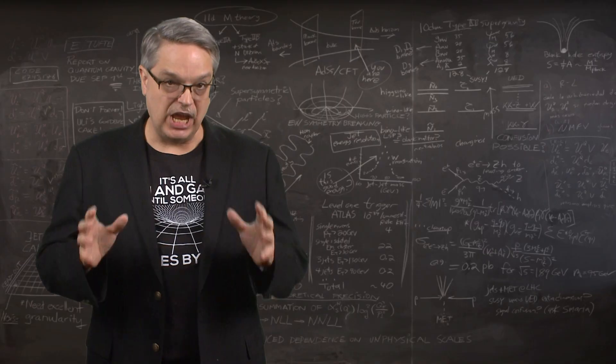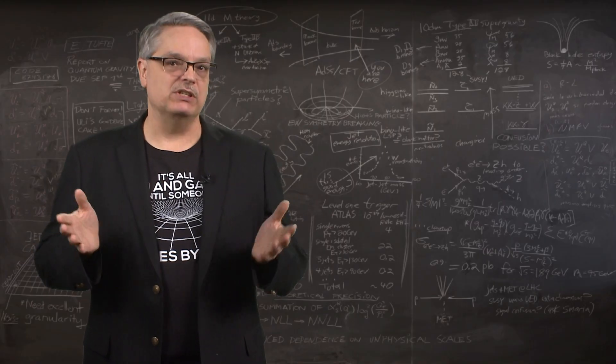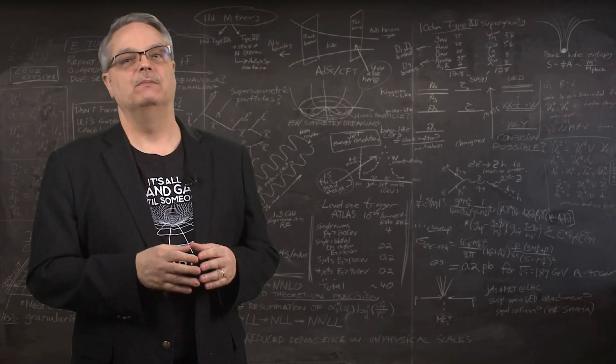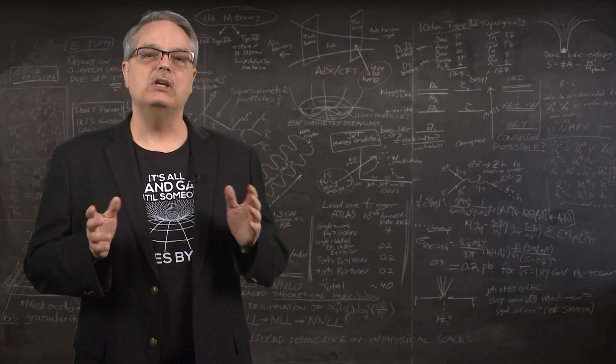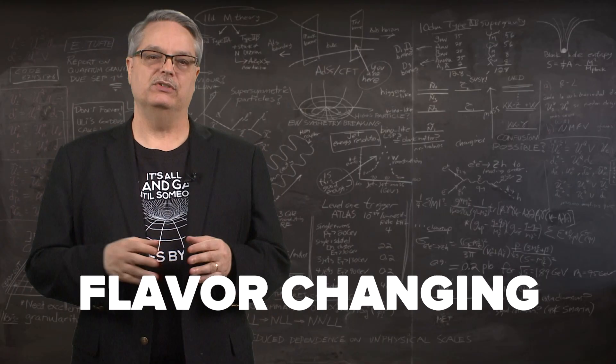But when the top quark emits a W particle, something very different happens. Before the emission, we have a top quark and after the emission, we see a bottom quark and a W boson. The weak force has changed the identity, what physicists call the flavor of the particle. This behavior is unique to the weak force and we call this phenomena flavor changing.